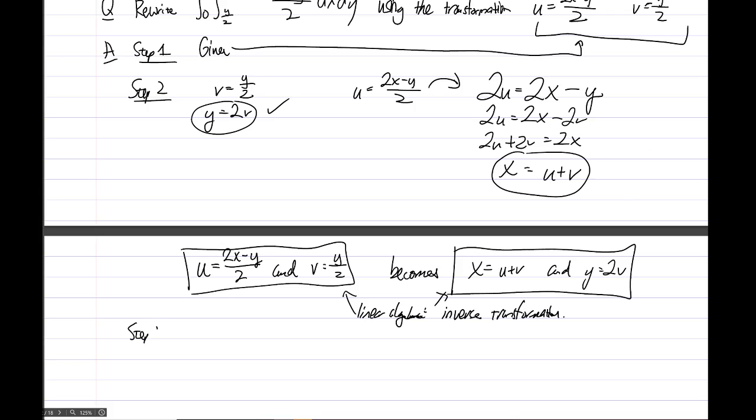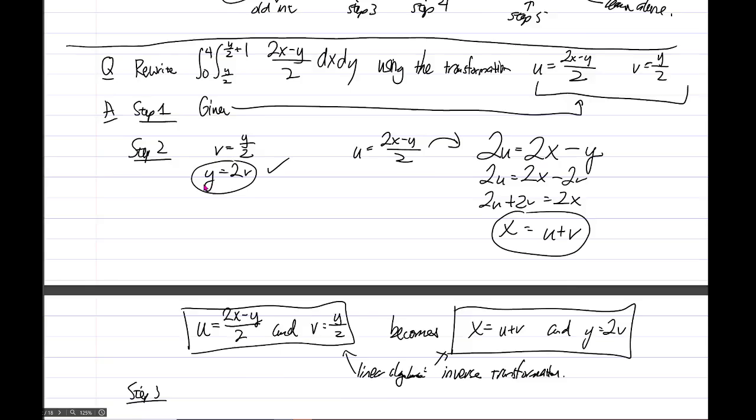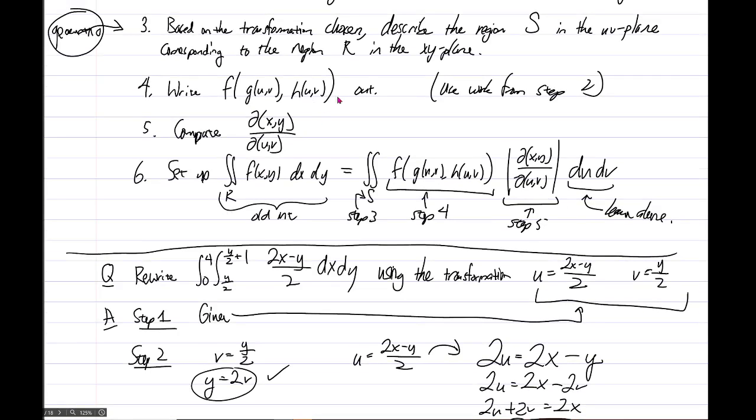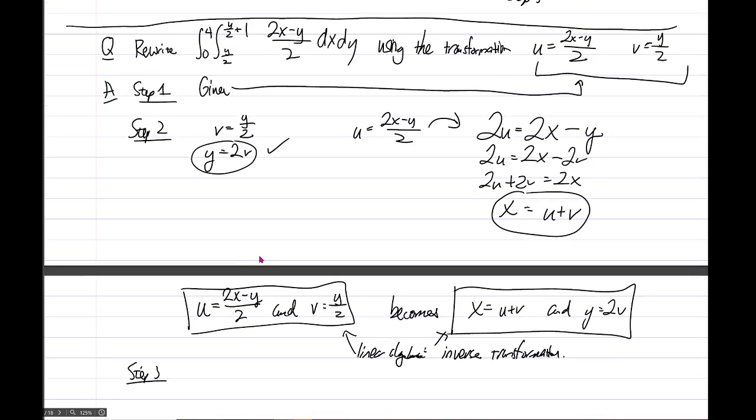Step 3. Let's go take a look at what step 3 was. Up here, step 3, based on the transformation chosen, describe the region S in the UV plane corresponding to the region R in the XY plane. Again, this step is highly geometric. If you try to leave out geometry from this process, things are not going to go well. So if we take a look at, based on how the region is described, based on the original problem, what is the region R?